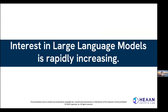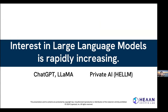Recently, interest in large language models has been increasing, with everyone paying attention to new models like ChatGPT and LLaMA. Utilizing them with private data remains challenging, leading to increasing interest in private LLMs. Some research findings have been published; however, these studies have focused on implementing models like BERT or GPT-2 using homomorphic encryption, which are significantly smaller than current LLMs. We are the first to implement LLM inference with a billion-parameter size using end-to-end homomorphic encryption.